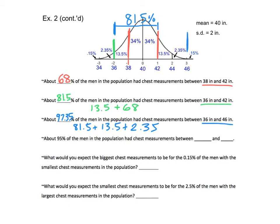About 95% of men had chest measurements between what two numbers? The empirical rule tells us 95% falls within 2 standard deviations of the mean. Two standard deviations below the mean of 40 is 36, and two above is 44. So 95% of men had chest measurements between 36 and 44 inches.